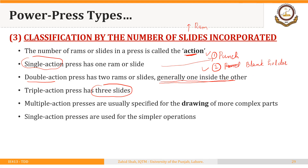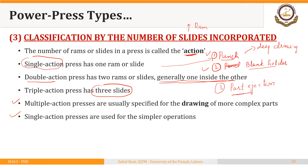In triple action presses, similar to double action, the third ram is used for part ejection from the die. Multiple action presses are specified for drawing more complex parts. Single action presses are used for simpler operations and are mostly mechanical, while double and triple action presses are mostly hydraulic. The double action press has two rams — one to actuate the blank holder and one to actuate the punch, both moving from the top down.